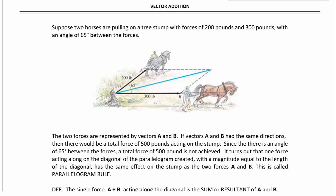In this video, we'll be talking about vector addition. Suppose two horses are pulling on a tree stump with forces of 200 pounds and 300 pounds with an angle of 65 degrees between the forces.